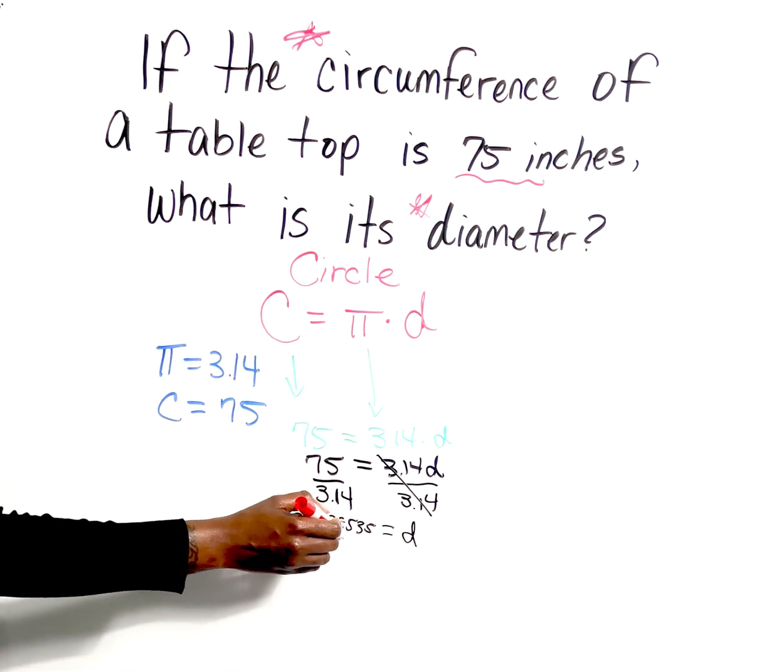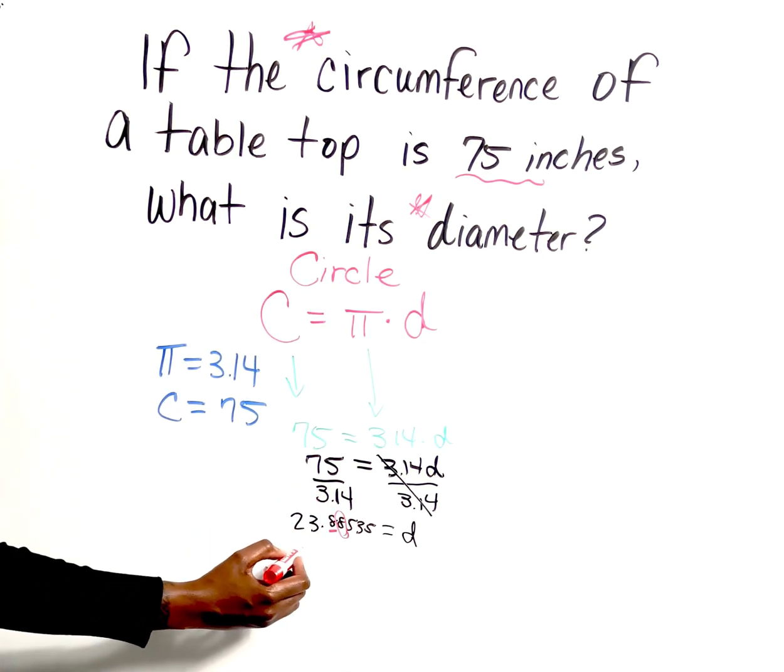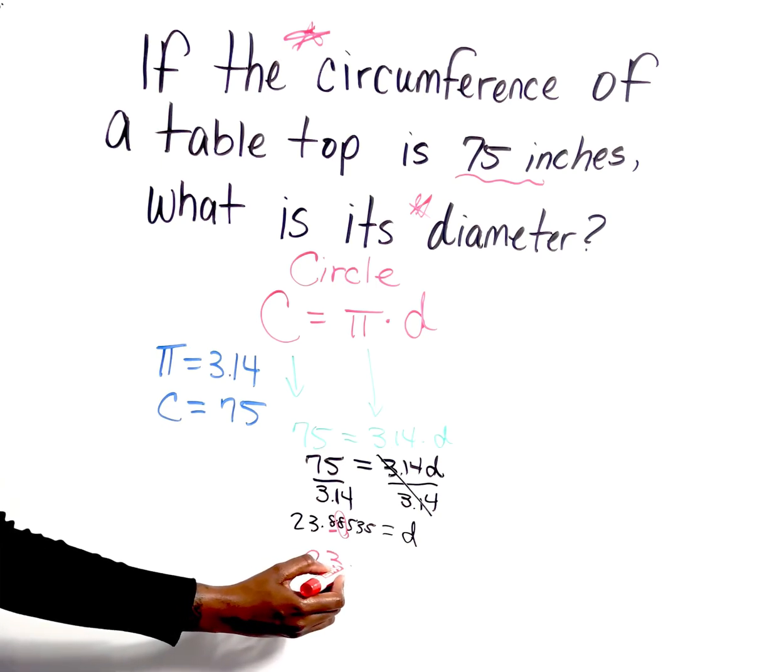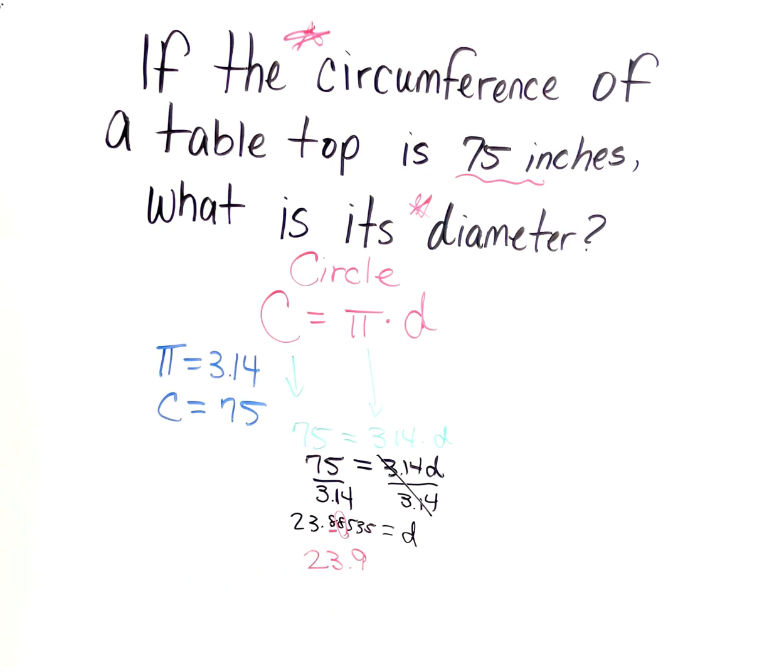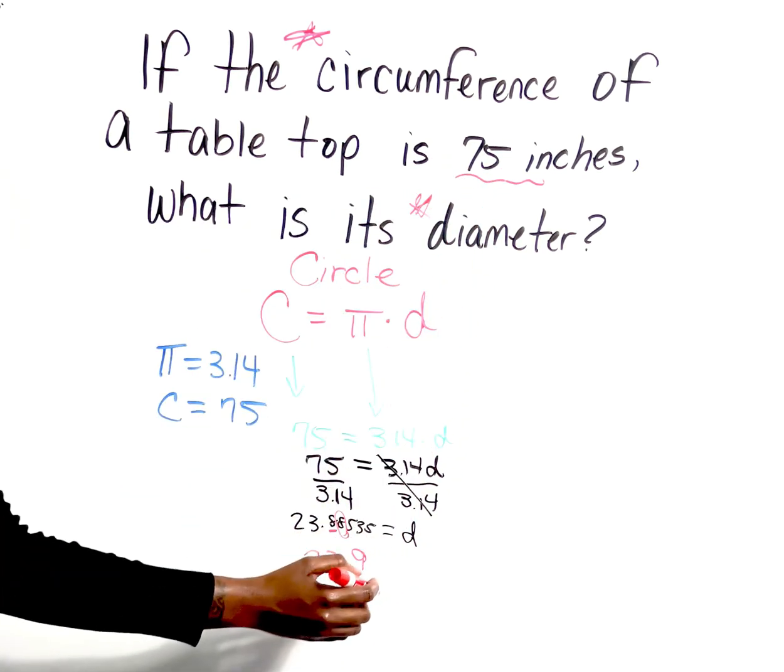So the tenth place is the first value after the decimal, which is an 8. We're going to assess the value to the right of it, which is an 8, which means our 8 is going to increase by one to nine. And always include your units—in this case we're dealing in inches.